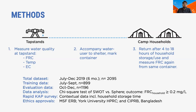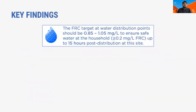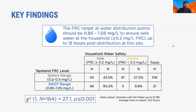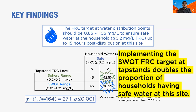Between July and December, we collected over 2,000 paired observations. We used data from July to September to train the SWOT's analytical models and generate a site-specific chlorination target, and data from October to December to evaluate the SWOT recommendation against the status quo sphere guideline using a CHI-square test. We also conducted a rapid CAP survey to gather contextual data, including the typical maximum length of time that water was stored in households at this site. The SWOT recommended a tap stand FRC target of 0.85 to 1.05 mg/L in order to maintain 0.2 mg/L FRC in households 15 hours later, which the CAP survey confirmed as the typical maximum storage time. The CHI-square test showed a statistically significant difference in household water safety outcomes, with the SWOT recommendation nearly doubling the proportion of households with safe water at 15 hours compared to the status quo sphere guideline.